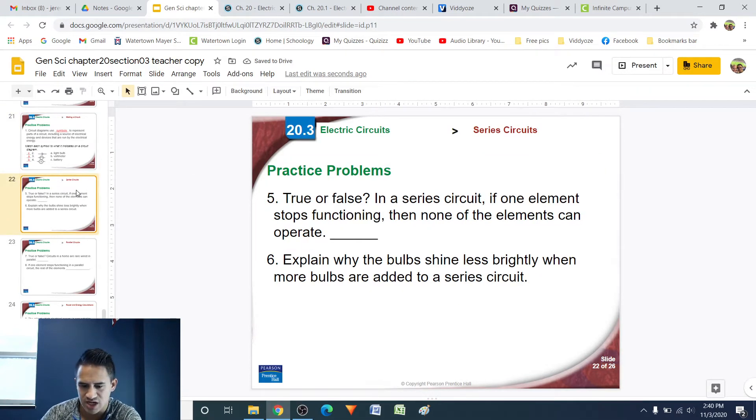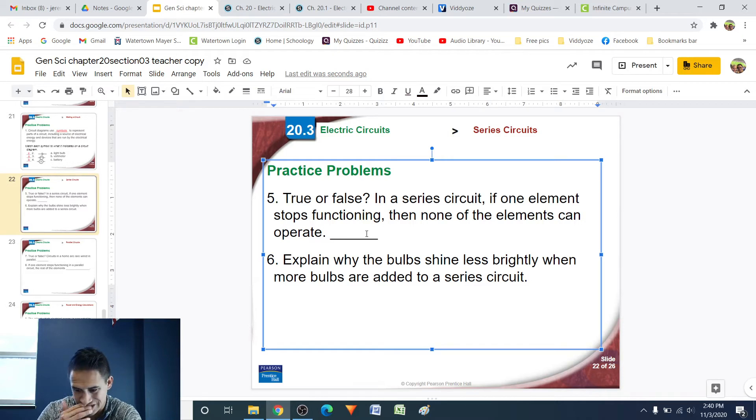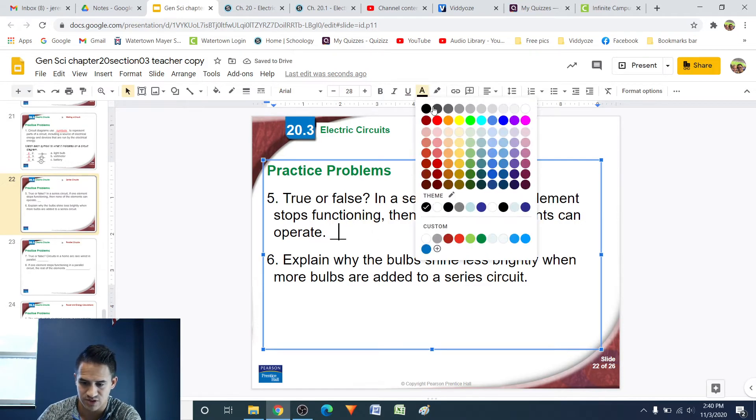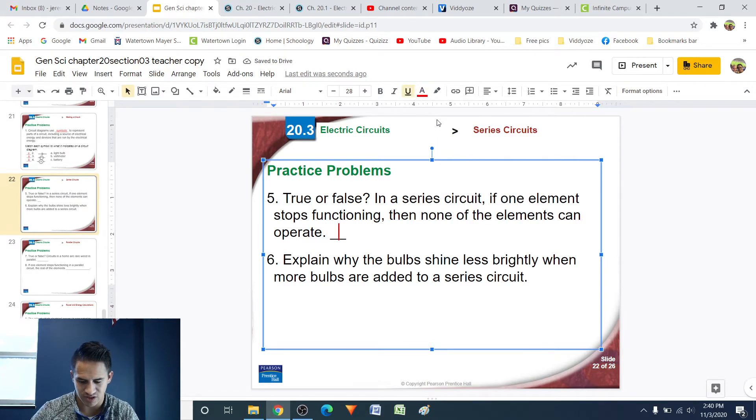Number 5, true or false? In a series circuit, if one element stops functioning, then none of the elements can operate. That is true. So in a series circuit, if one part of it goes out, everything goes out. Very, very annoying, because if one little part goes out, you don't want the whole thing to go out. Just that part can go out and the rest of it should keep working. That's going to be more like a parallel circuit.